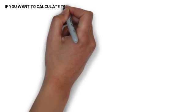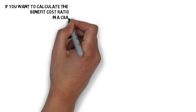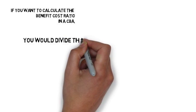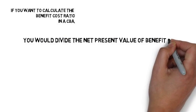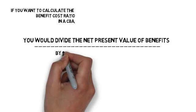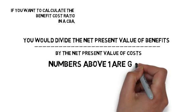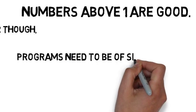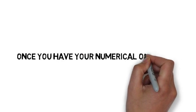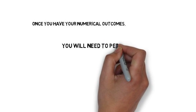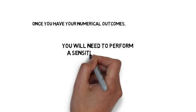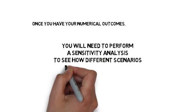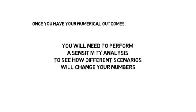If you want to calculate the benefit-cost ratio in a CBA, you would divide the net present value of benefits by the net present value of costs. Numbers above one are good. Remember, programs need to be of similar size. Once you have your numerical outcomes, you'll need to perform a sensitivity analysis to see how different scenarios will change your numbers.